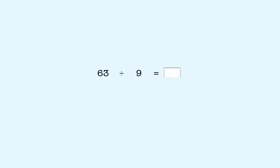63 divided by 9. We ask ourselves, 9 times what number is 63? The answer is one more than the digit in the tens place of the product. So the answer is 7. So 63 divided by 9 is also 7.